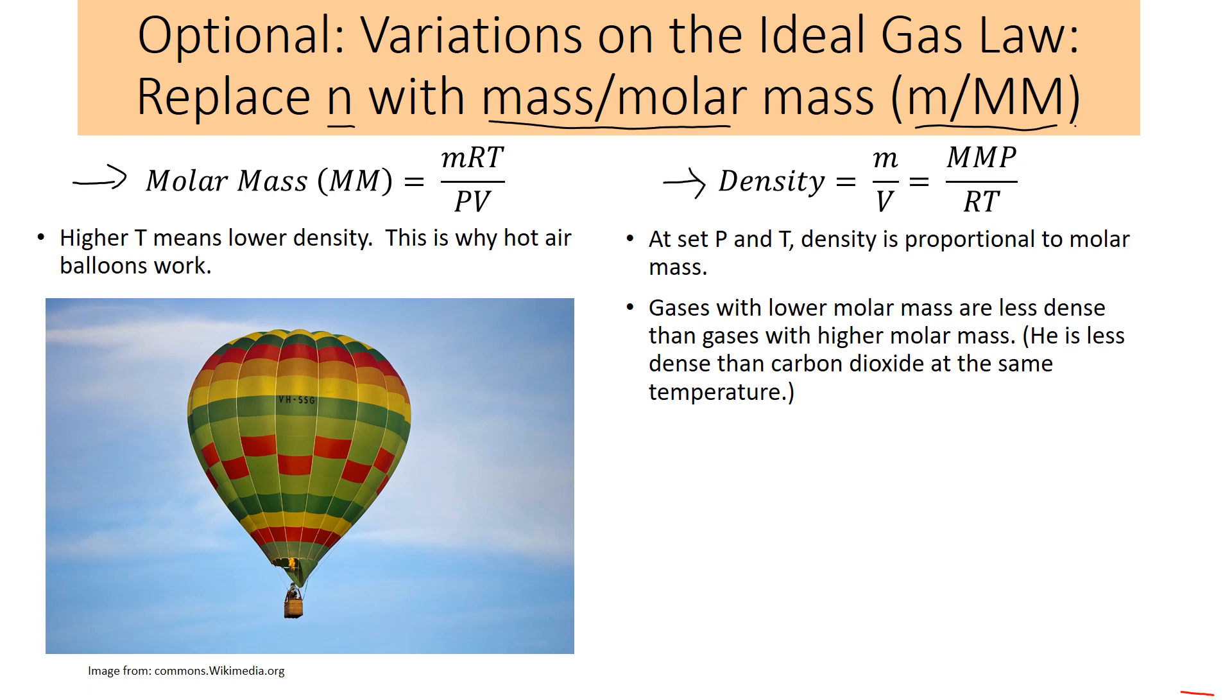Density, which is mass over volume. Two things to notice about this. One, it's inversely proportional to temperature. So higher temperature means lower density. That is important for hot air balloons. That's why they rise, because at the higher temperature, there's lower density. It also explains why certain gases float. Gases with a lower molar mass are less dense. That's why helium will float, because it has a very low molar mass compared to air or carbon dioxide.